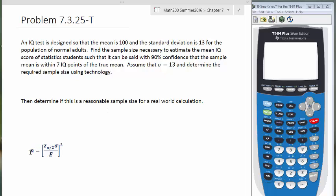We have a formula down here: n is equal to Z sub alpha over 2 times sigma divided by E, all quantity squared. That's all we need to use, so we just need to identify the different components.